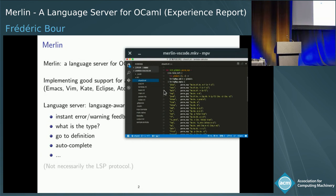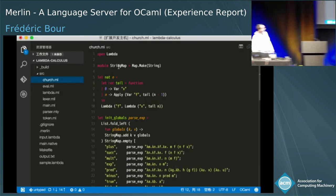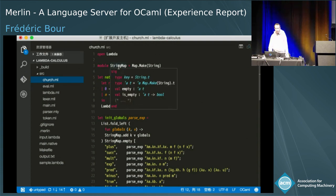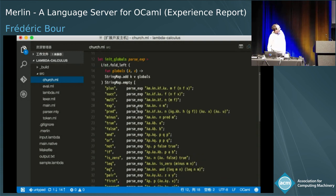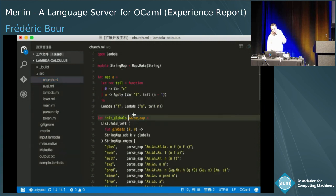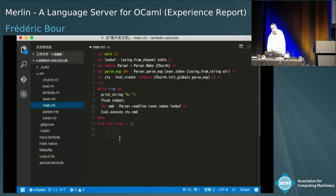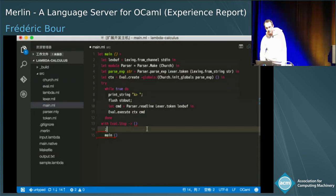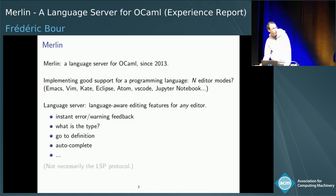This video has been contributed by one user of Merlin. It's running Visual Studio Code. Here you can see that by putting the cursor over some module definition, you get the signature of this module. Inside the code, you get type information about the expressions. You can ask for more information, jump to the definition where an identifier is bound, and get completion and information about type errors.